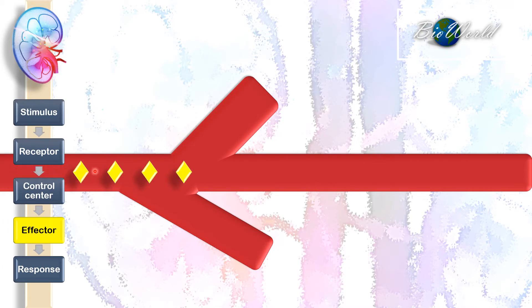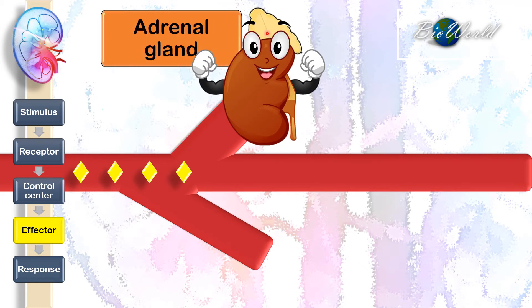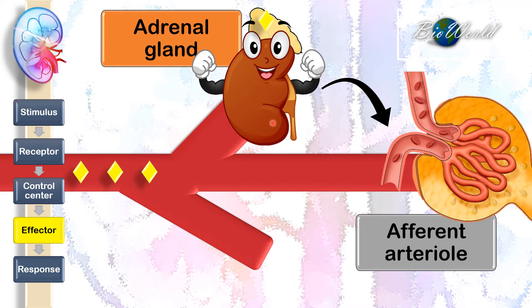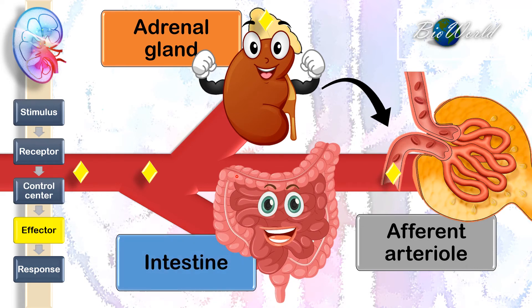Angiotensin 2 will then be transported by blood to specific effectors. The first effector is the kidney — specifically, the adrenal gland located above the kidney. Angiotensin 2 will stimulate the activity of the adrenal gland. Angiotensin 2 will also enter inside the kidney, where it will cause an effect to the afferent arteriole. Besides the kidney, the other effector is the intestine, where angiotensin 2 will also affect intestine activities.